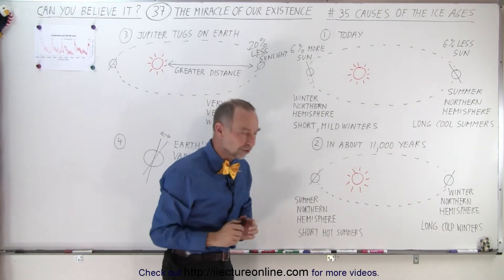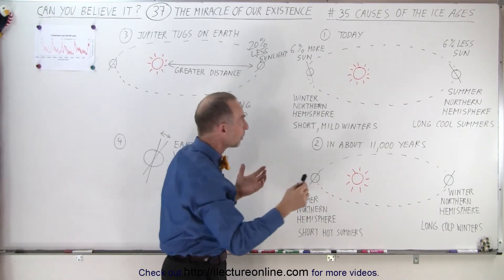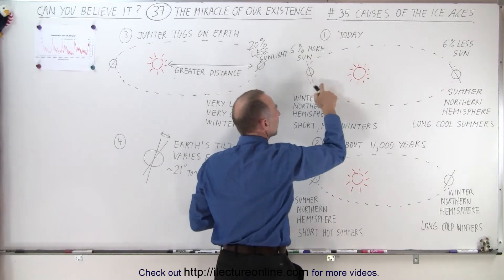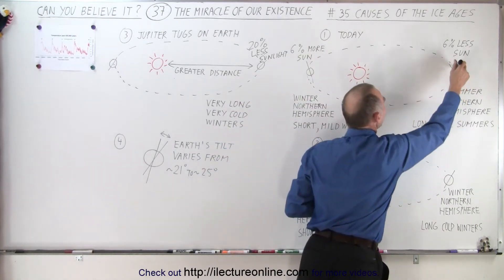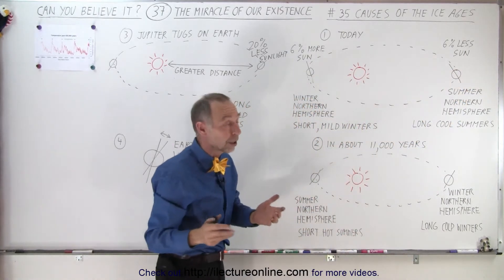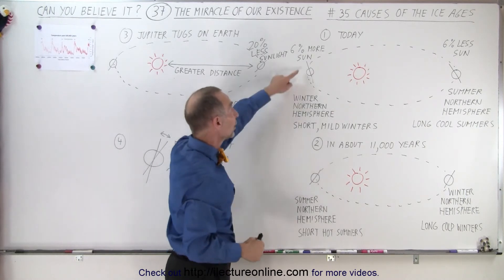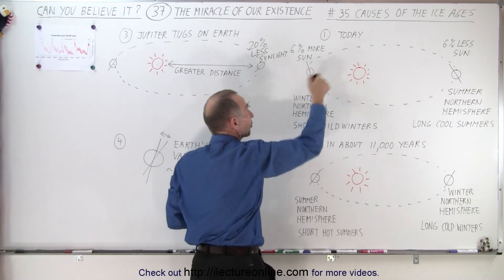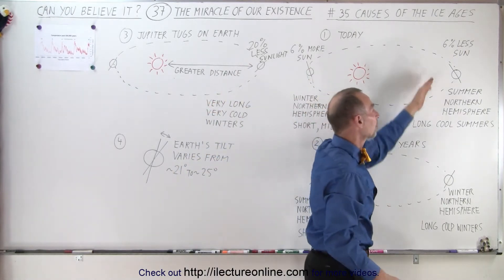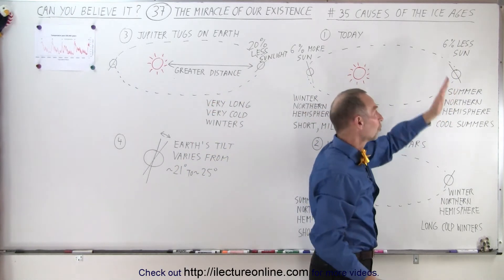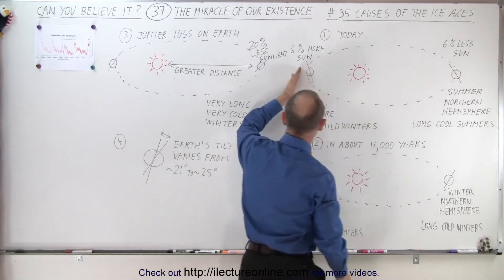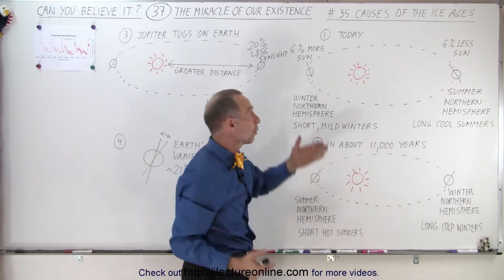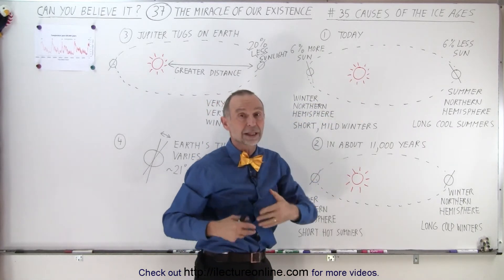Our winters are relatively mild because we're closer to the sun and we receive about six percent more energy during winter than summer. According to Kepler's second law, we travel faster around the sun when we're close to it and slower when we're farther away. So our winters are shorter because we travel faster when close to the sun, and our summers are longer because we travel slower — giving us longer summers, shorter winters, and warmer winters, which is why we're currently in a mild interglacial period.